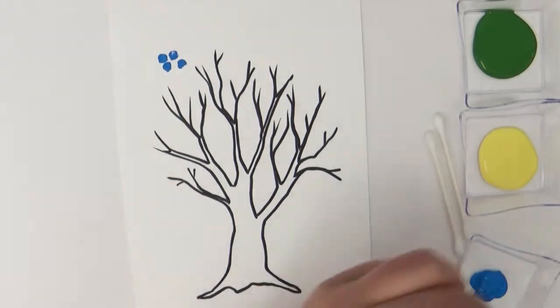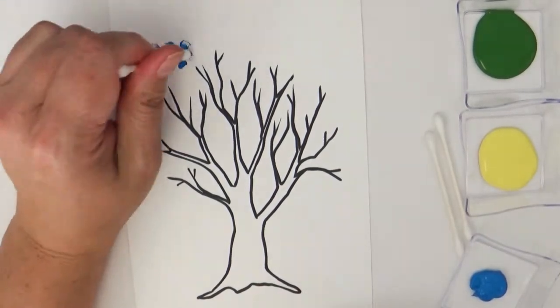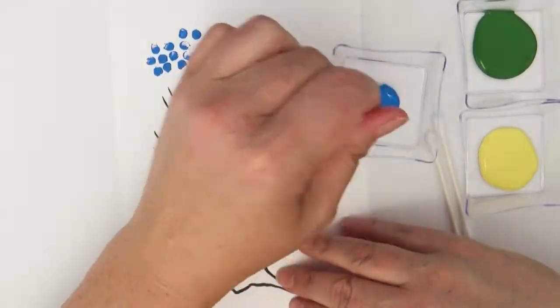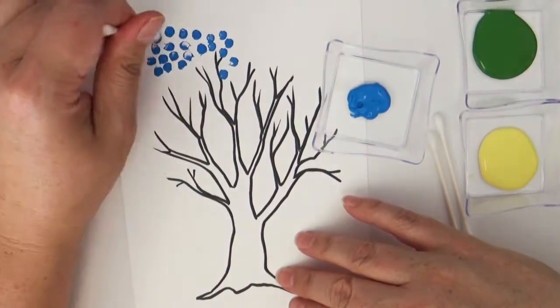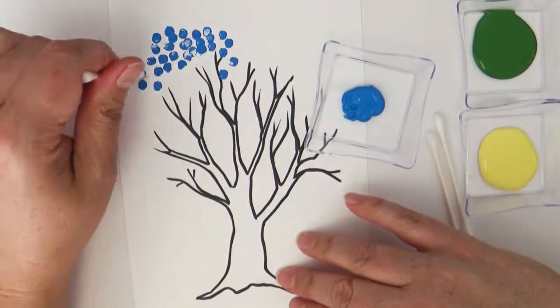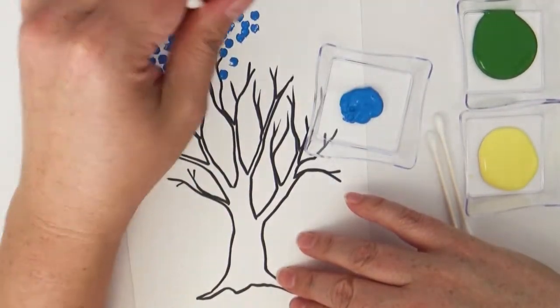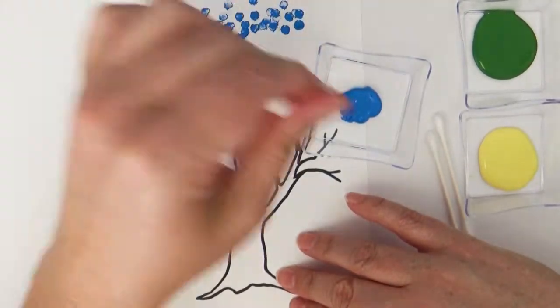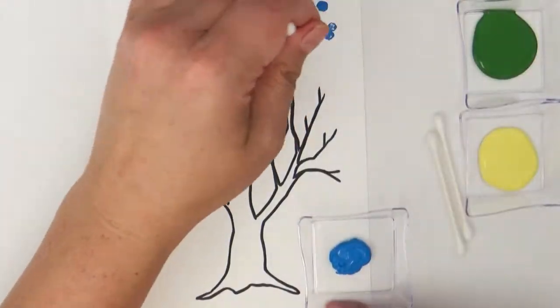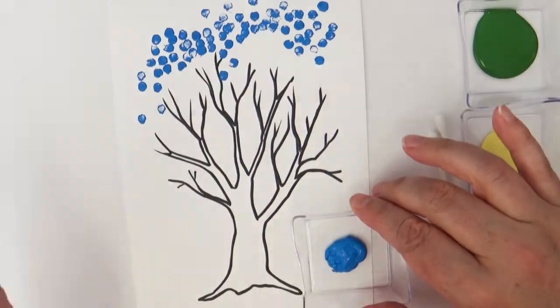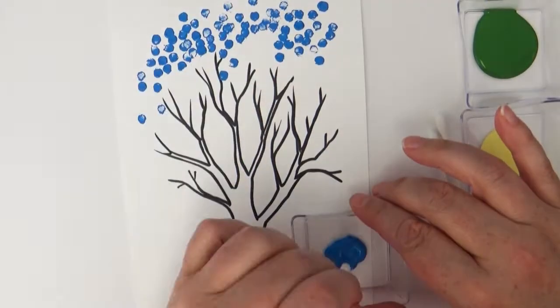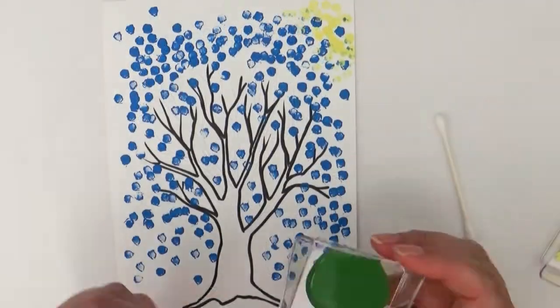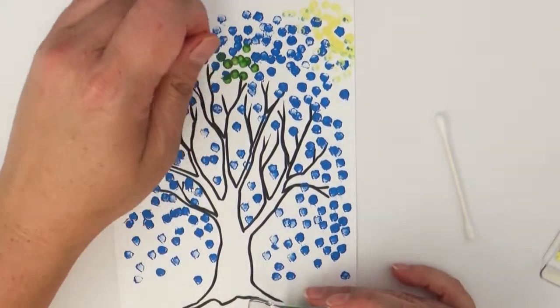Now the fun thing about this is that you can layer the colors up on top of each other. So I'm going to start with the background. I'm going to use the blue for the sky. I don't want to put a ton of paint on my q-tip. I can re-dip as much as I want to but if I use a lot of paint it's going to get gloppy and smudgy and smeary. So just enough to create some nice little dots. You can also vary your dots. Don't have them in a row. Have some clustered closer together and some farther apart.